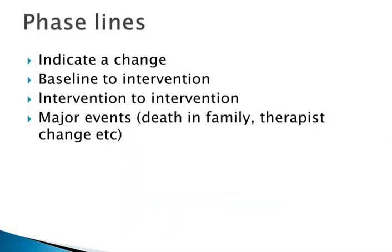Phase lines are the vertical lines that come straight down, and you put those in to indicate some kind of change — something happened that may change the data. For example, when you go from baseline to intervention, that's when you hope the data changes. When you change interventions, because you want to see if the change had any influence on the behavior. You can also use phase lines for major events — a death in the family, therapist changes, change in school — major life events that could affect the data.